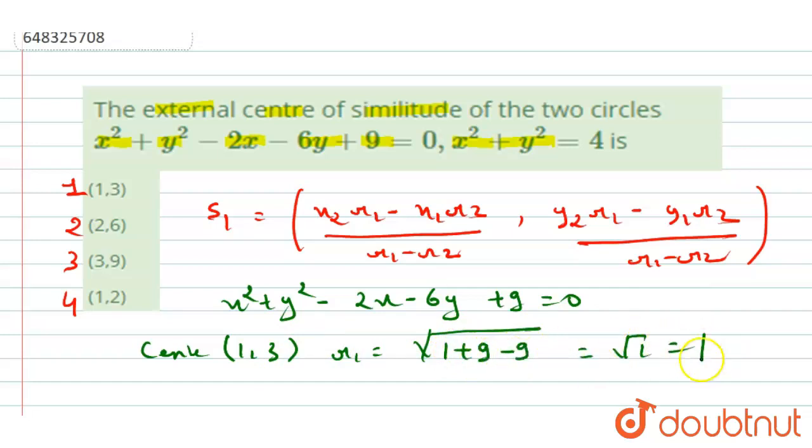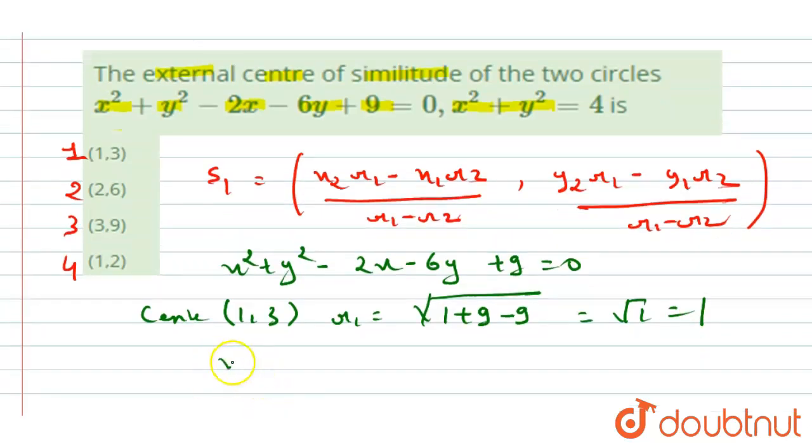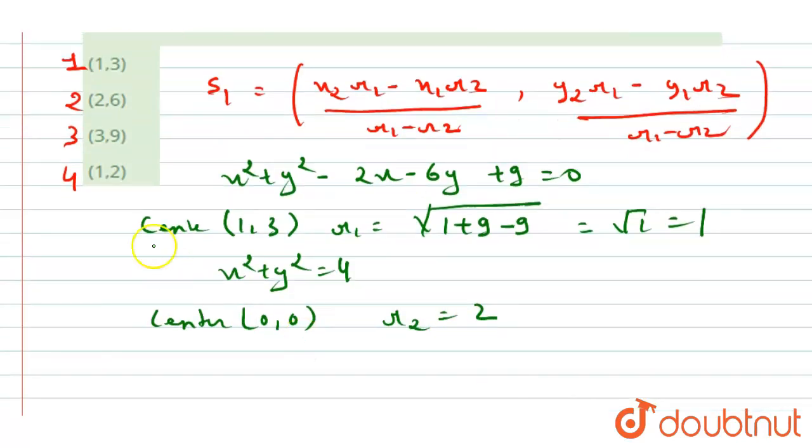Now for the second equation that is given to us, x² + y² = 4. So what we will get: we will get center (0,0) and r₂ equals 2.